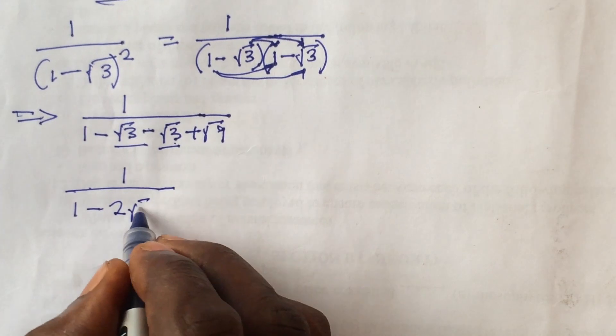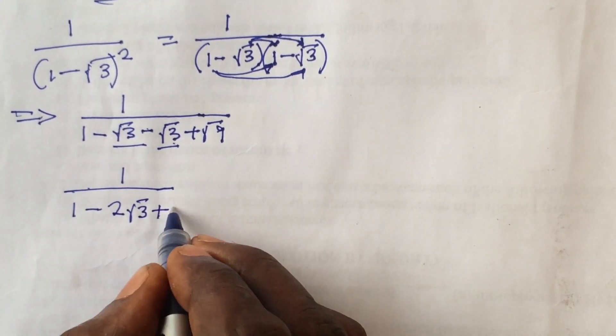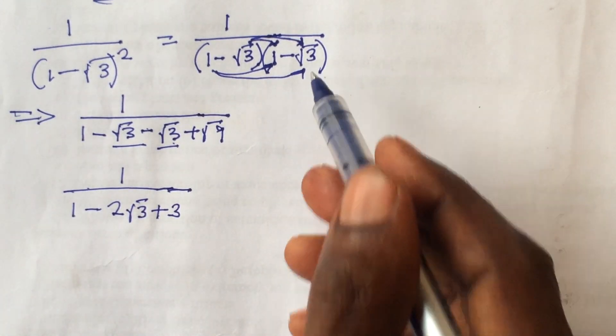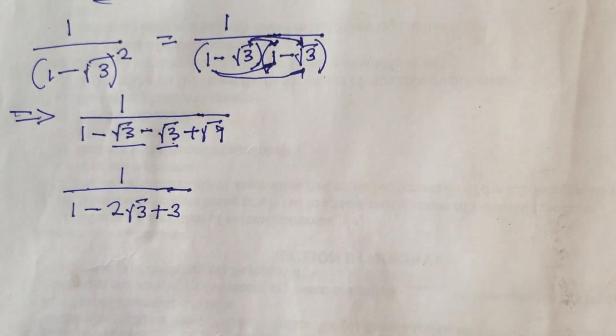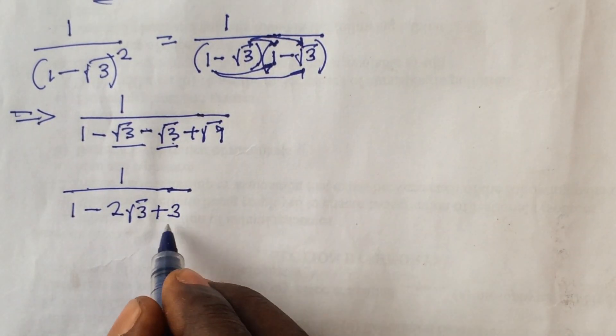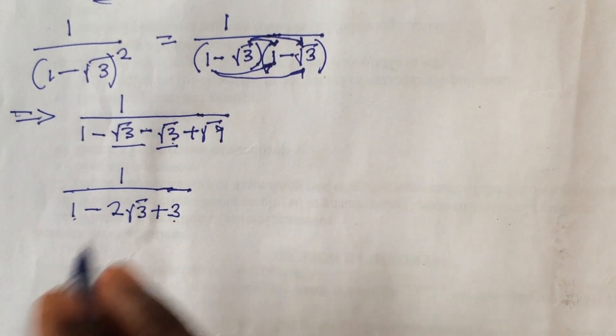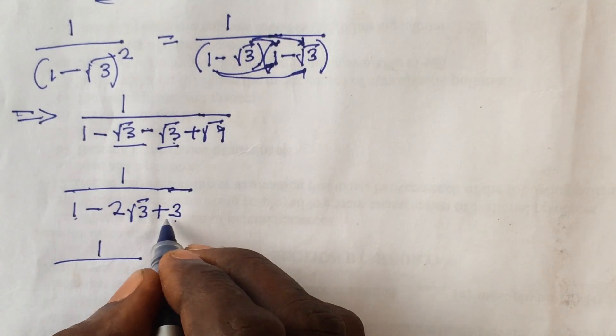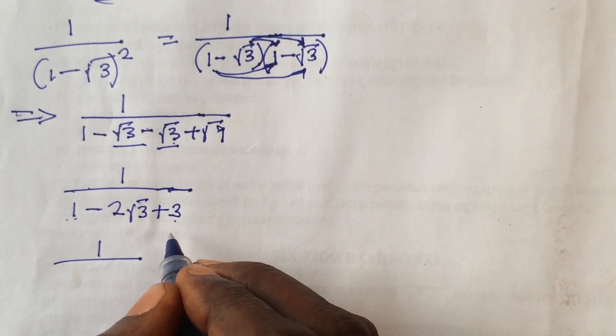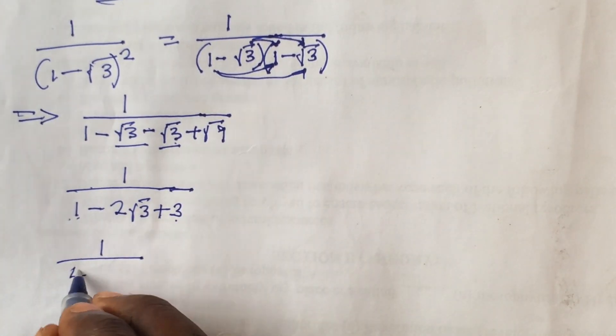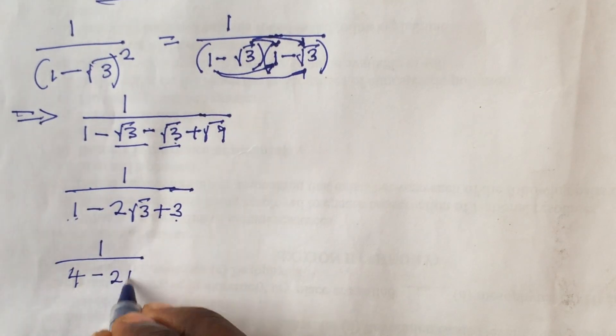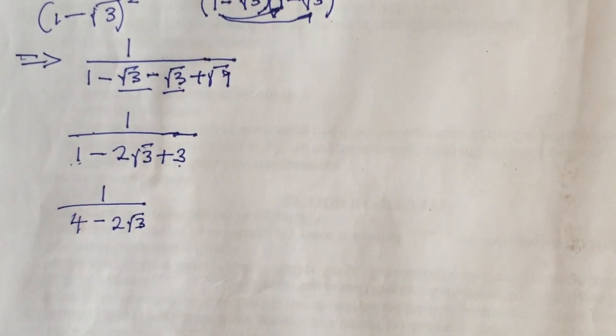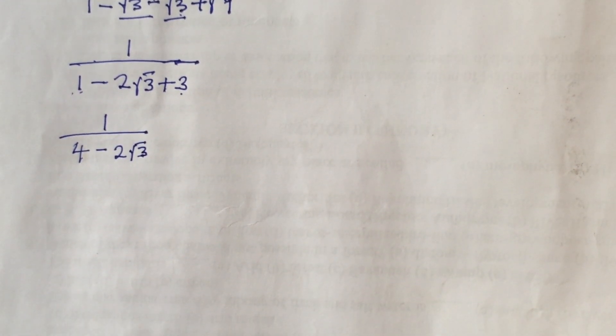We add 1 and 3 together: this gives us 1 over 4 minus 2 root 3. Now we have a surd.